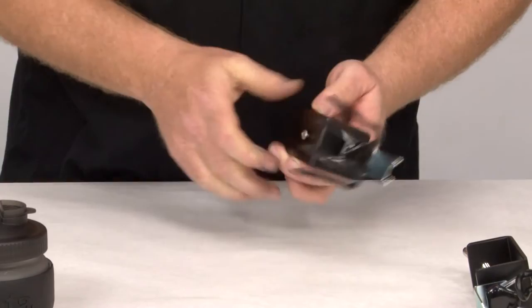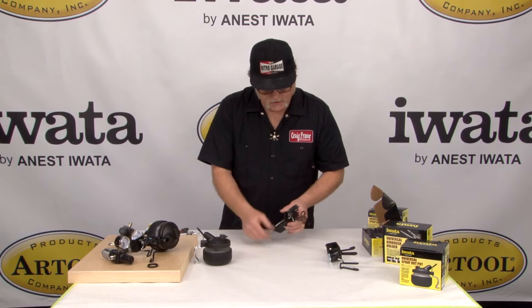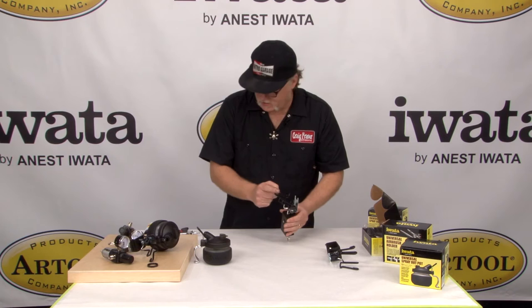We already talked about the improvements over the previous airbrush mounts that Iwata has. This one's got the deeper clamp to hold on tables, but the biggest difference is the actual wires that hold the airbrushes. They're quite a bit different in design, and because it's universal,